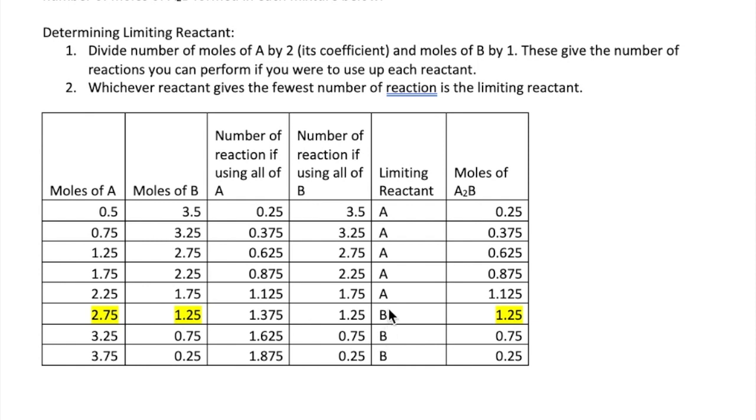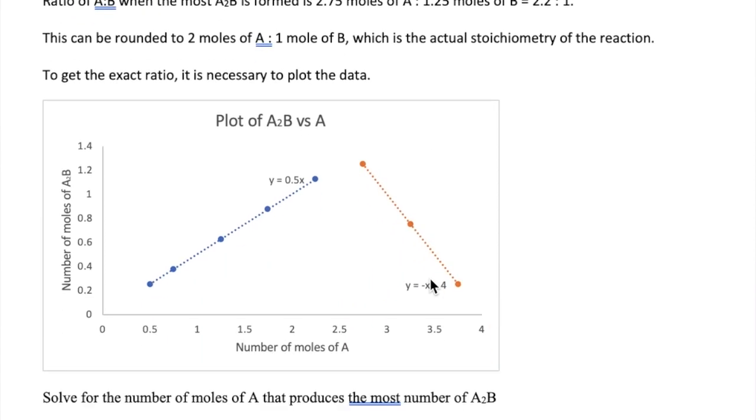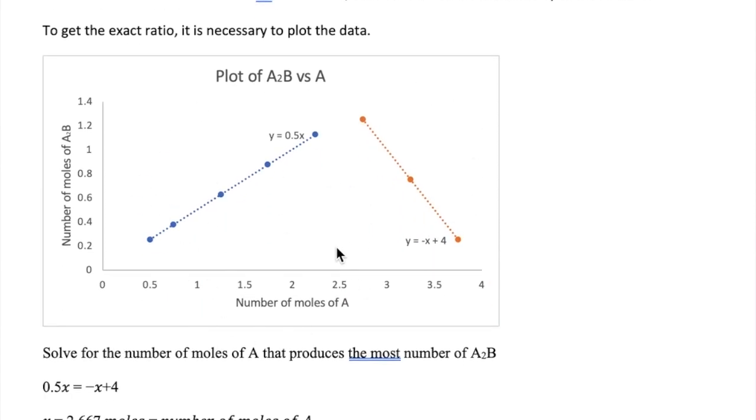At some point though, the limiting reactant changes from A to B, as you keep increasing the number of moles of A. As the quantity of limiting reactant, in this case B, decreases, the product also decreases. This pattern means that if we plot the quantity of product as a function of one of the reactants, we will see a line that increases, reaches a maximum, and then decreases, as shown here.